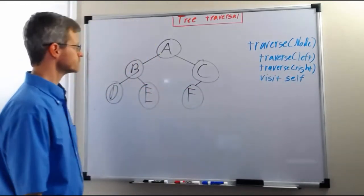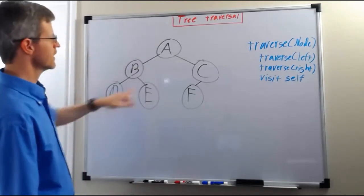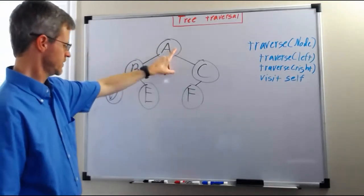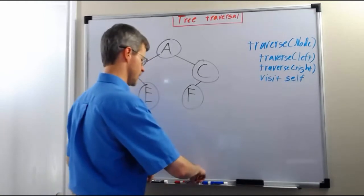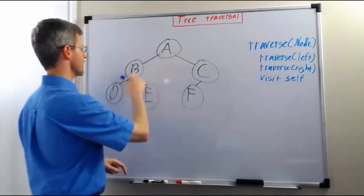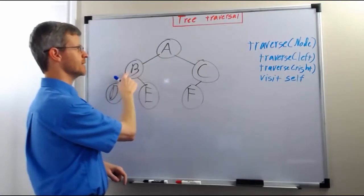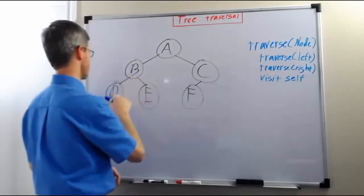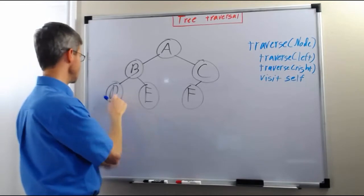So, in order to do a post-order traversal of this tree, we begin at the root, which is A, and then we would traverse left, which is going to put us at B, and then on B we are going to traverse the node again, so we would traverse left. That is going to put us at D.